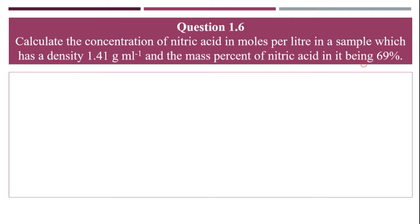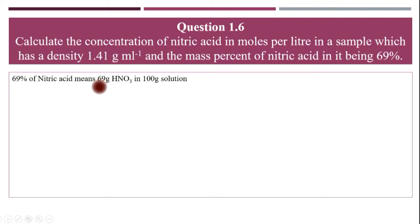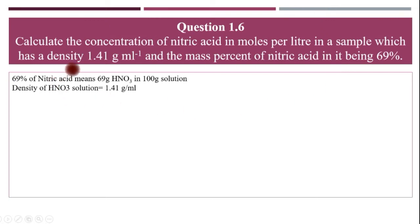Let's identify what the given data means. 69 percent of nitric acid means 69 grams of nitric acid in 100 grams of solution — that's what we get from the 69 percent figure. The other given value is the density of nitric acid solution, which is 1.41 grams per ml. The question asks us to calculate the concentration in moles per liter.